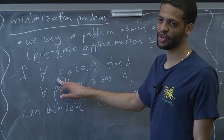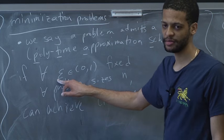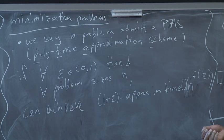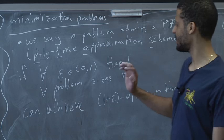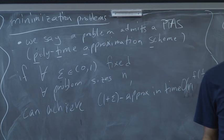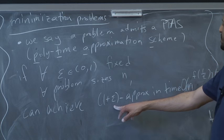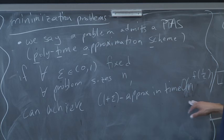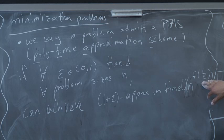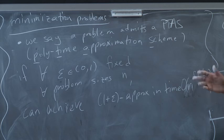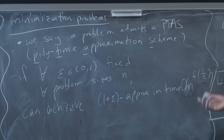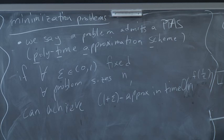Think of epsilon as a fixed constant like 0.1. For any fixed constant epsilon you give me, there is an algorithm that gets a 1 plus epsilon approximation in this time. F of 1 over epsilon could be terrible — it could be 2 to the 2 to the 2 to the 1 over epsilon — but if epsilon is fixed, this is a polynomial.